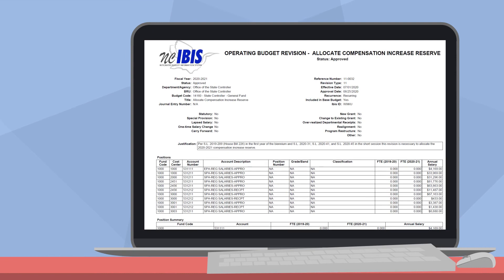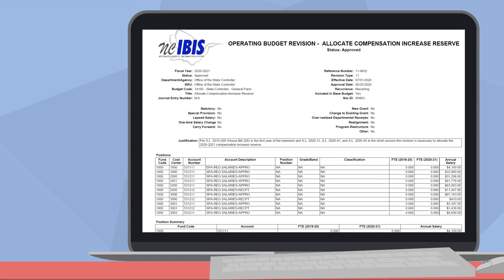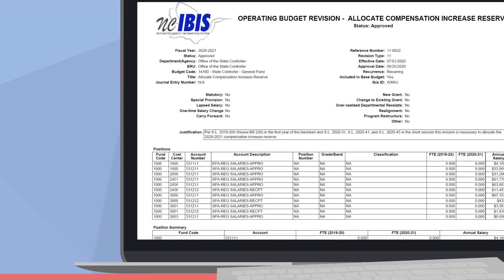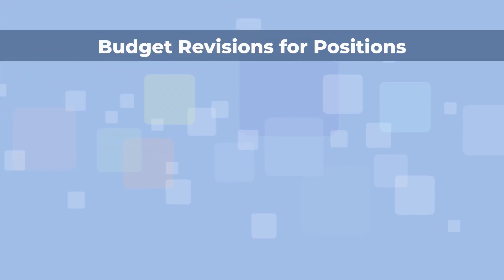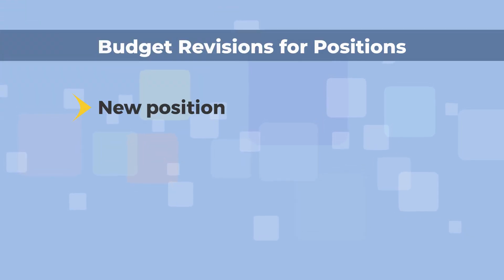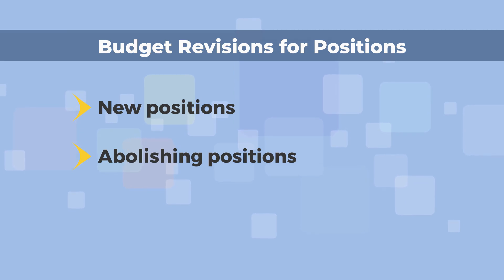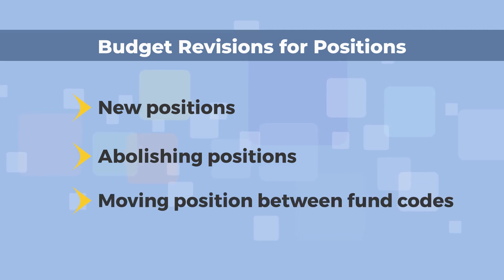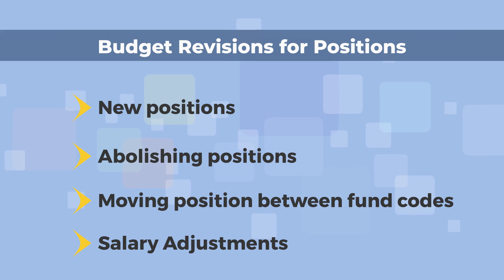If any adjustments to budgeted positions are made, your agency will need to use the Positions tab. These changes could include creating a new position, abolishing a position, moving a position between fund codes or account numbers, or making a salary adjustment to a position.